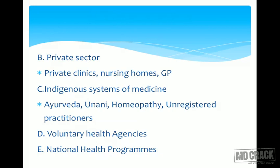The second category is the private sector: private clinics, nursing homes, and GPs. The third system is the indigenous system of medicine — Ayurveda, Unani, homeopathy, and a lot of unregistered practitioners.